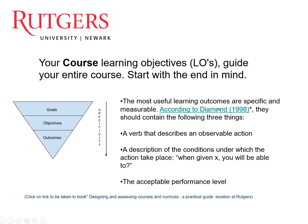Diamond says that your learning objectives need to have three things. The first is a verb that describes an observable action. The second, a description of the conditions under which the action will take place. And thirdly, the acceptable performance level.